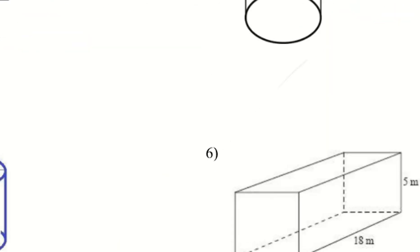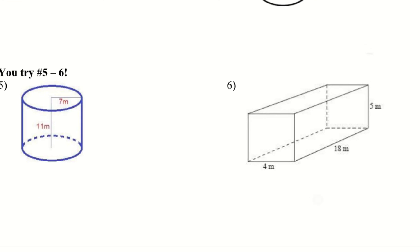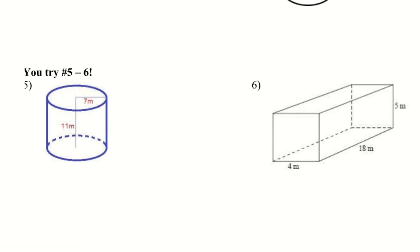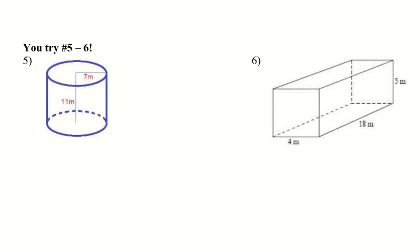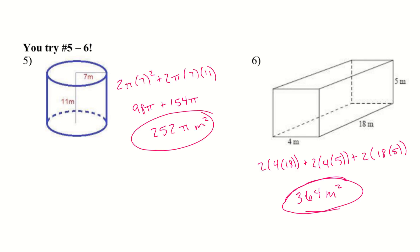Let's go ahead and take a look at problems 5 and 6. I'll give you a moment — pause the video and try these two out. Here are the solutions for 5 and 6: we have the cylinder and the rectangular prism.